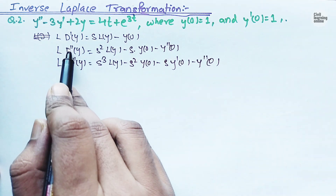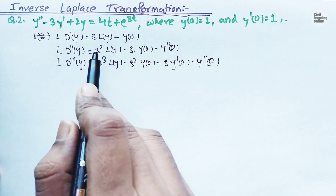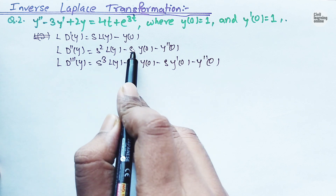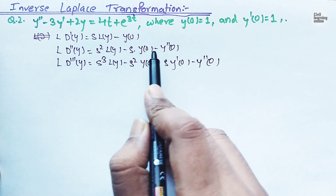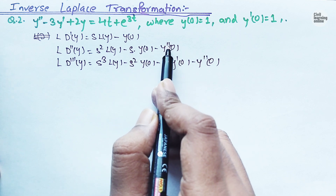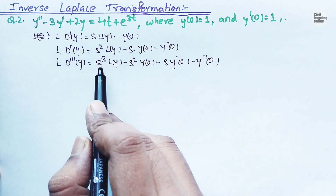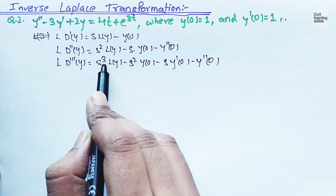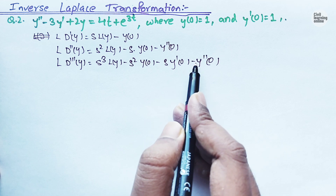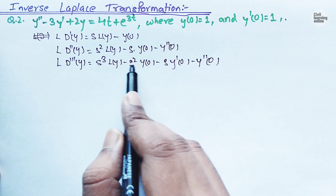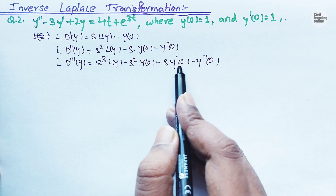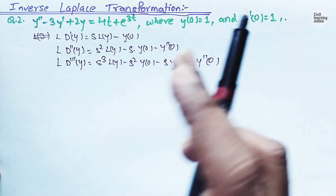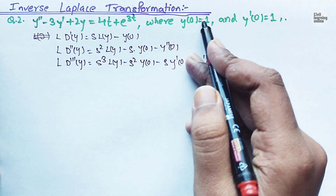What is happening here: for a first-order derivative we bring s¹, for a double-order derivative we bring s², and the power of s decreases — here it goes 2, 1, 0 — while the derivative order of y increases. This pattern is clearest in the third formula. Whenever we use these formulas we will be provided with boundary conditions.